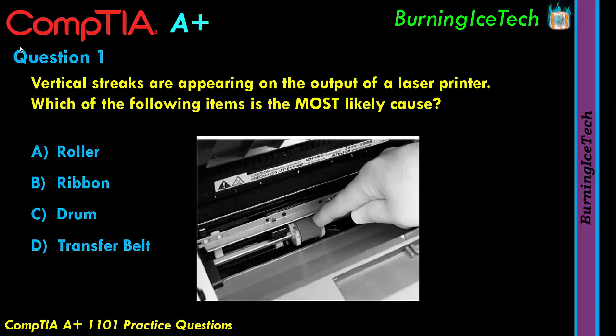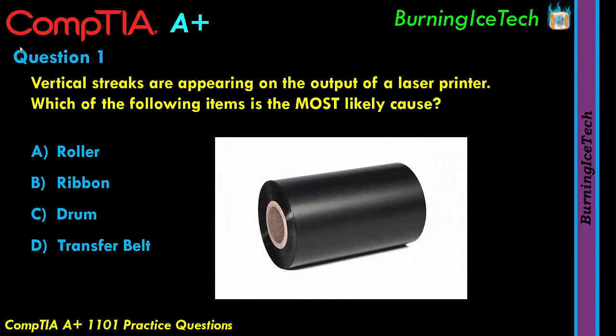Looking at answer Ribbon — ruling that out right away. Ribbon is a special kind of ink used in impact printers, also called dot matrix printers. They're very old and quite rare. Where laser printers use toner — a powder ink — and inkjet printers use liquid ink, impact printers use a special ribbon that looks like a bluish-purplish-blackish piece of paper, similar to carbon paper. It's got nothing to do with our laser printer vertical streaks issue.